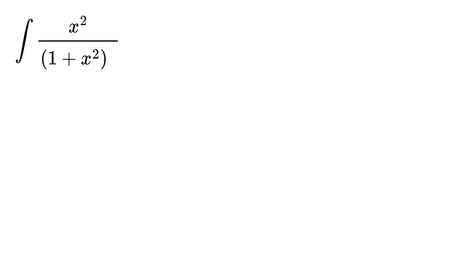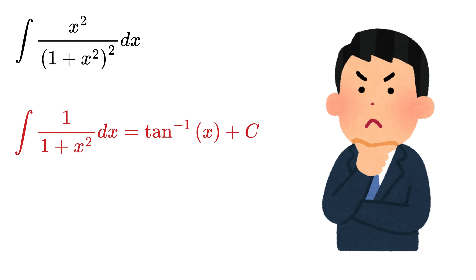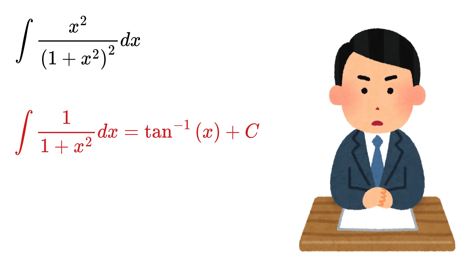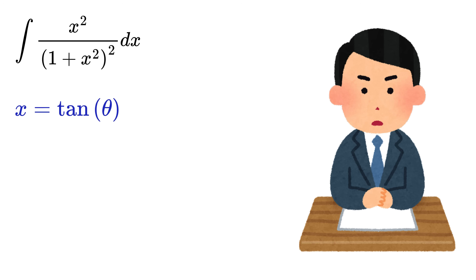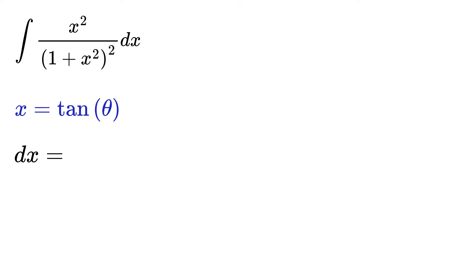If I ask you to find the integral of x squared over (1 plus x squared) whole square, then at first glance, from your Calculus 2 course, you might think of the standard integral of 1 over 1 plus x squared, which is tan inverse of x, and thus you might think of using a trigonometric substitution like x equals tan of theta, such that dx equals sec squared theta d theta.